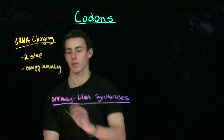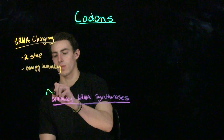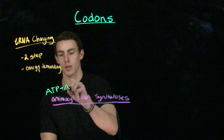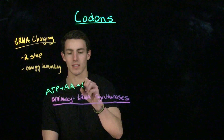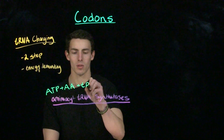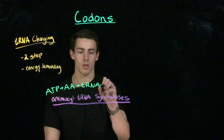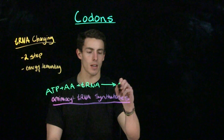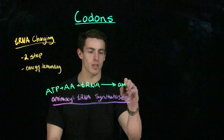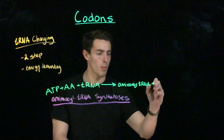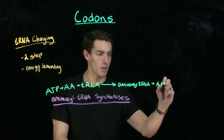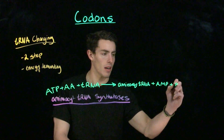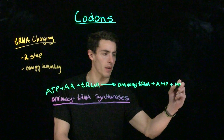The aminoacyl tRNA synthetase reaction involves a molecule of ATP reacting with an amino acid and a tRNA molecule, resulting in aminoacyl tRNA, a molecule of AMP, and an inorganic pyrophosphate.